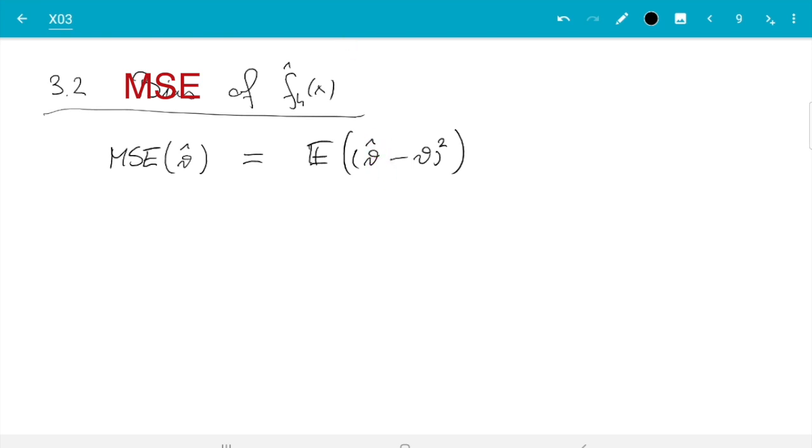Or there is the alternative way of writing it: it's the variance of θ-hat plus the bias of θ-hat squared. That's the form I'm going to use here. We have just worked out the variance, we know the bias from last lecture, so that will be an easy job.